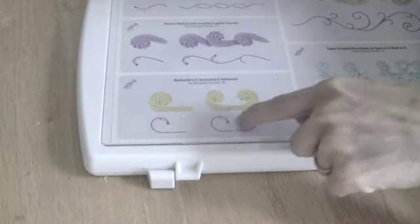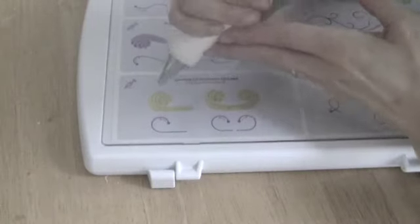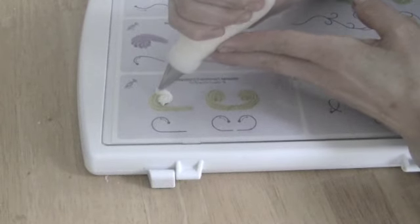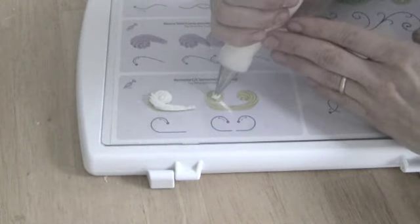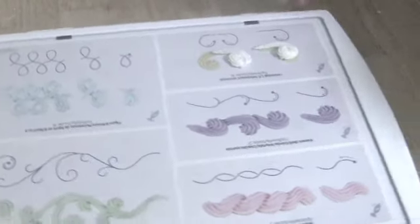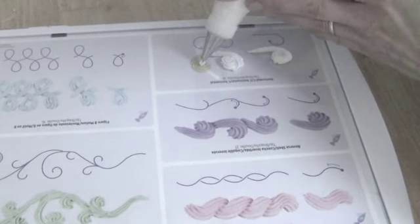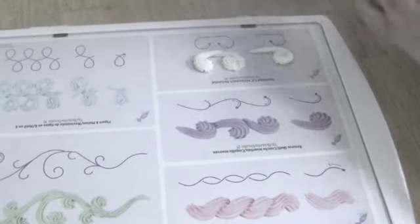To do horizontal C scrolls, we're going to use a tip number 16, and we're going to think about doing a rosette. Only instead of finishing it off as a rosette, we're going to finish it off kind of like a shell or even a reverse shell. In fact, you could almost think of this as two reverse shells that are curved towards each other.